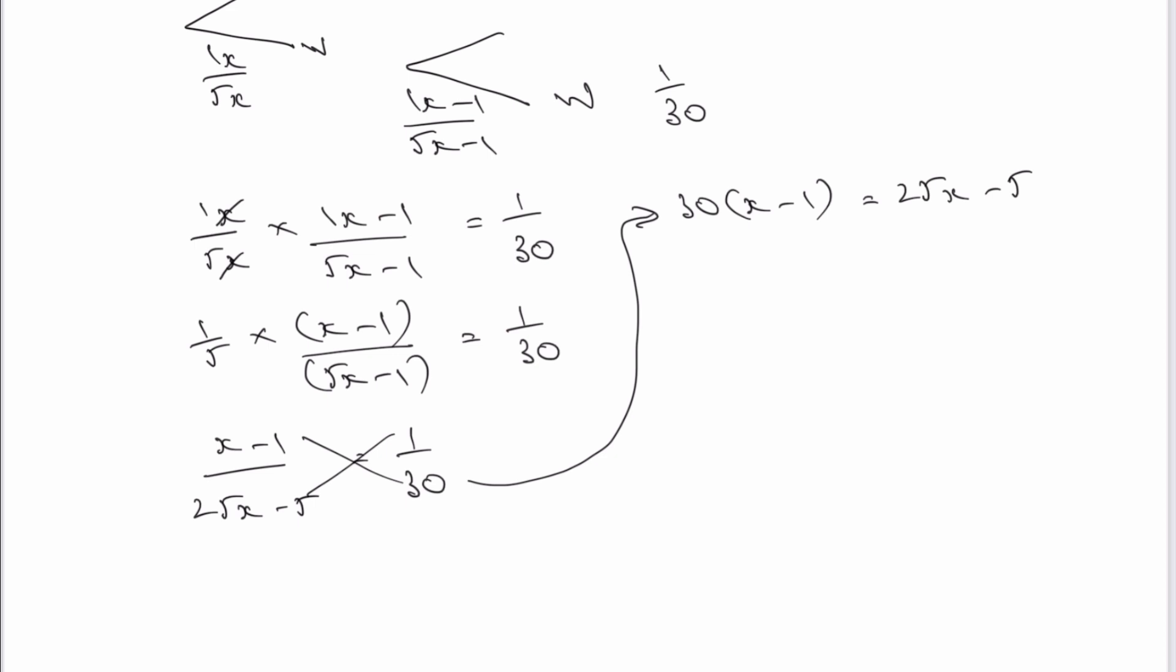OK, now when I start expanding this out, what I'm going to end up with is an ability to solve for x, because I'm going to get 30x minus 30 equals 25x minus 5. If I bring the 25x over towards the left-hand side here, I'm going to get 5x, and I get the minus 30 over to the right-hand side, and that's going to give me positive 25 because I've got minus 5 plus 30. So therefore, x must equal 5.